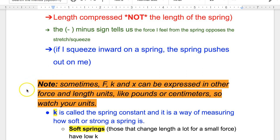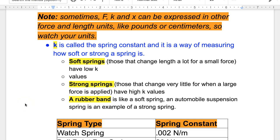Let's look at what k is, the spring constant. Soft springs change length a lot for a smaller force, whereas strong springs change very little. Like an automotive would be strong, a watch spring would be soft.